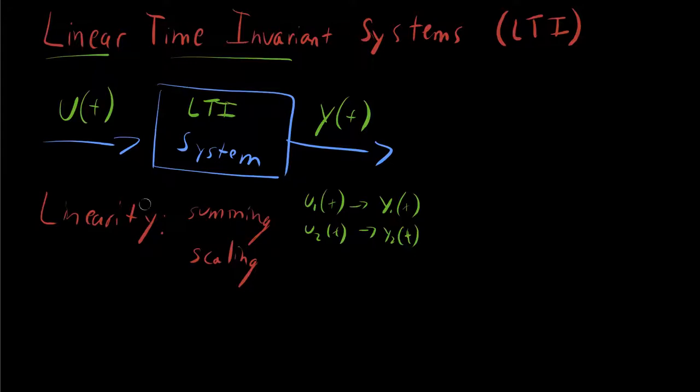What it means to be linear is that if you take u1 plus u2, add the two signals together first and pass the sum through the system, the output will be as if you just passed the individual ones through first and then summed them afterwards. This is what it means to be summing in a linear sense.